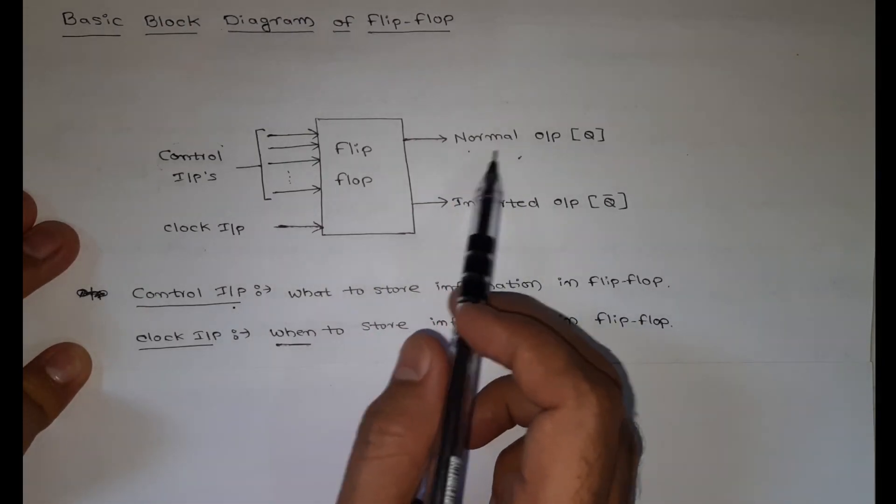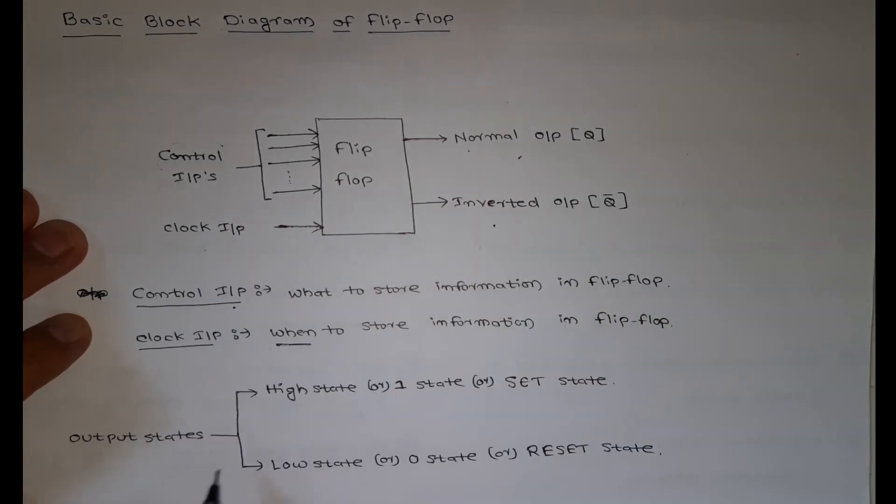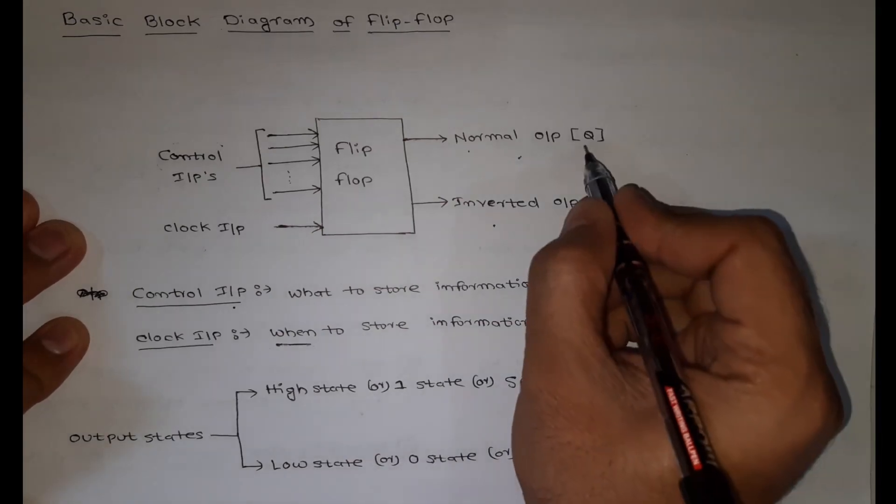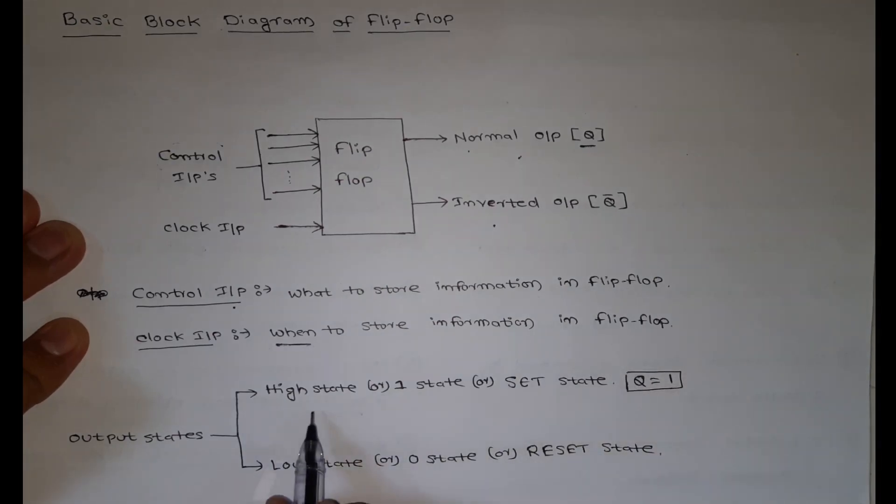output states: one is normal output and inverted output. If you see output states, we have a high state, or one state, or set state. This means when Q equals 1, we call it high state,